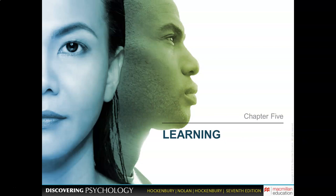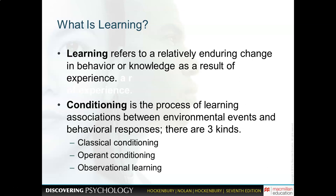In this chapter, you may be a bit surprised that learning occurs in many different ways, and psychologists have researched many different ways that we indeed do learn. What is learning? Learning refers to a relatively enduring change in our behavior or knowledge as a result of our experience. Some of the first ways of learning researched early in psychology was conditioning — a process of learning associations between environmental events and behavioral responses. We'll look at classical conditioning, operant conditioning, and observational learning.